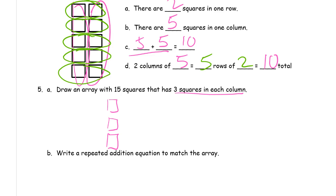So there's 3 squares in each column. I need 15 squares. So that's 3. And you may already know how many columns you need. 3, 6, 9, 12, 13, 14, 15. Okay.